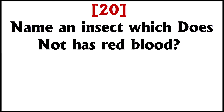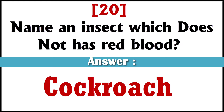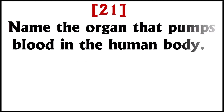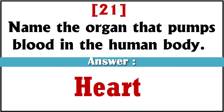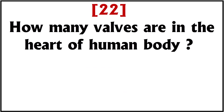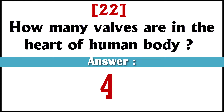Name an insect which does not have red blood. Answer: Cockroach. Name the organ that pumps blood in the human body. Answer: Heart. How many valves are in the heart of the human body? Answer: Four.